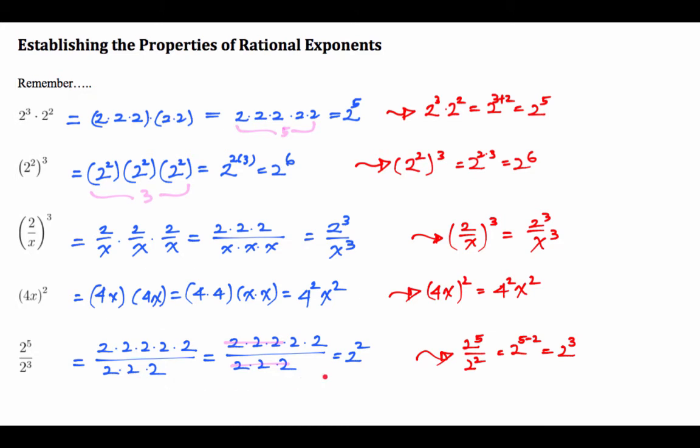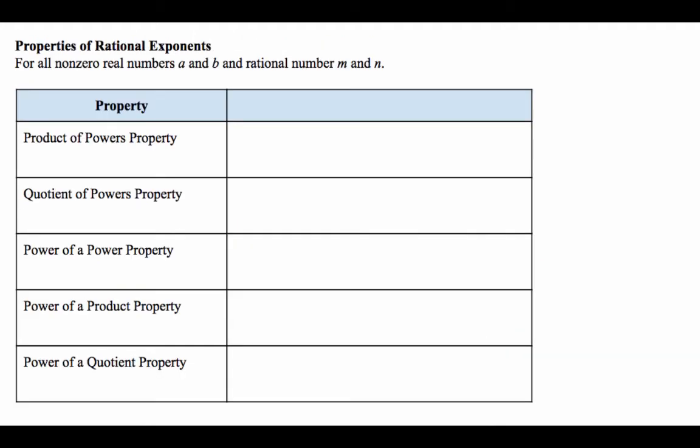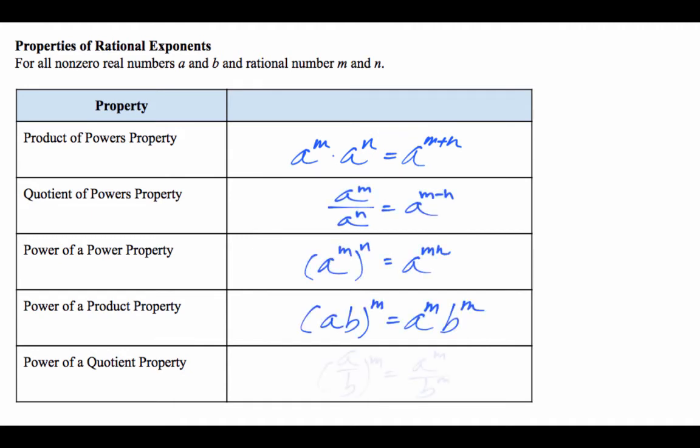Let's formally write the properties down. You've seen this before in previous classes, so I'm just going to show you each one. The first one we did is the product of powers property—we add. Quotient of powers property, that's the last one we did—we subtract. Here, you have power of a power. We just multiply, whether it be product or quotient. We distribute to both bases.